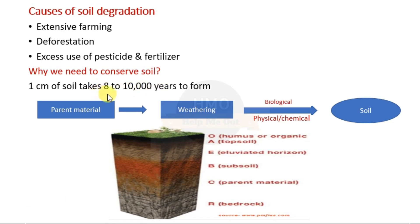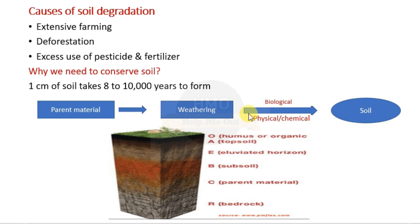If you know the process of soil formation, one centimeter of soil takes 8,000 to 10,000 years to form — a very long duration. Soil is formed by the weathering of rocks or parent material, and during this process various reactions run simultaneously. Once soil is formed, it is characterized into different horizons as seen in a soil profile picture.